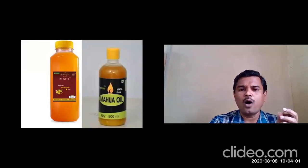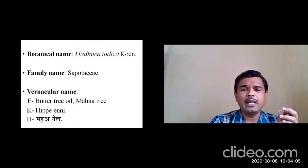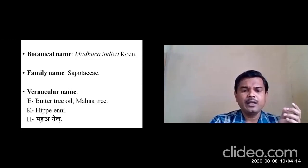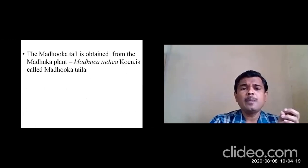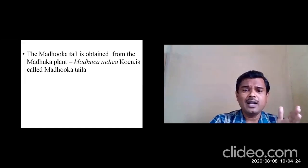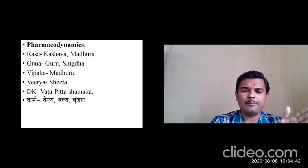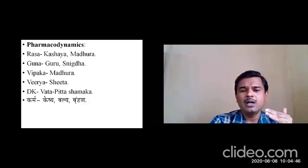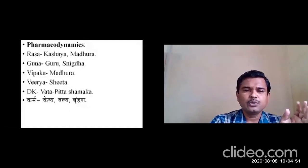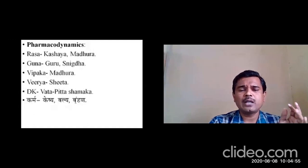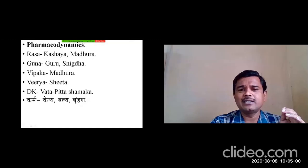The last oil is Maduka Tayla (butter tree oil) — from Madhuca indica, belonging to the Sapotaceae family. In English it is called butter tree oil or Mahwa tree oil; in Hindi it is called Mahwa Tel. The oil is obtained from the fruits of Madhuca indica. Properties: Kashaya Madhura Rasa, Guru Snigdha Guna, Madhura Vipaka, Shita Virya. Dosha karma: Vata Pitta Shamaka. Karmas: Keshya, Twachya, Balya, and Brumhana. With this, today's topic on Tayla Varga concludes, and in the next class we will see Harupega Varga.